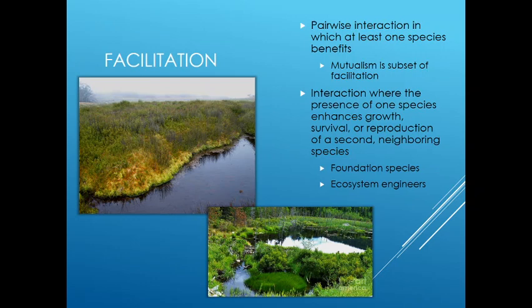Two classic examples of facilitation involving neighboring species are foundation species and ecosystem engineers. This picture shows a sphagnum bog — sphagnum moss is a species that changes the conditions of the habitat, makes up most of the biomass of a bog, and sets the conditions for the whole habitat. Then we've got beaver dams. Beavers are ecosystem engineers that have a huge impact on the whole ecosystem, changing it from a flowing stream to having dams with still water, allowing a bunch of different species to live there that couldn't before.